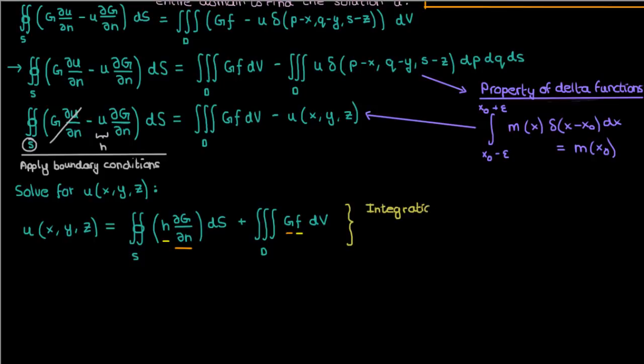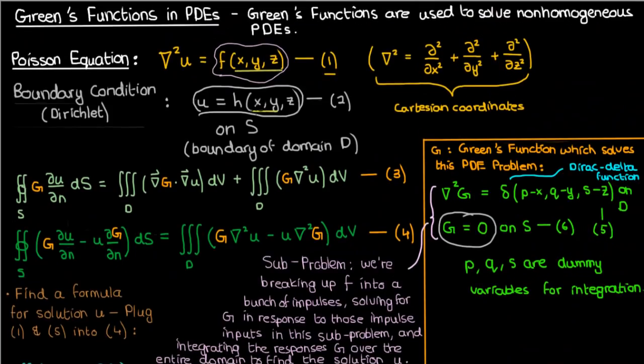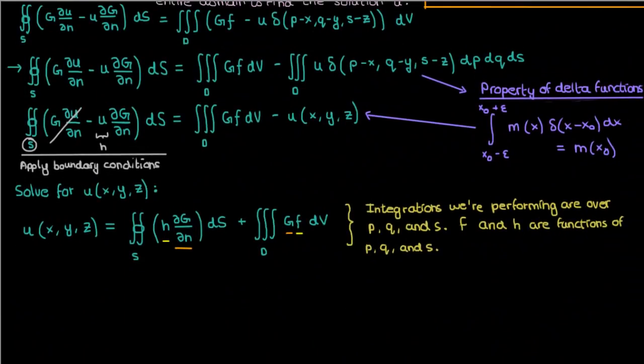Just note that these integrations we're performing are over the dummy variables p, q, and s. The functions f and h are now in terms of p, q, and s as well. Up here they were in terms of x, y, and z, so all we have to do is replace the x by the p, the y by the q, and the z by the s when we plug f and h into these integration formulas.